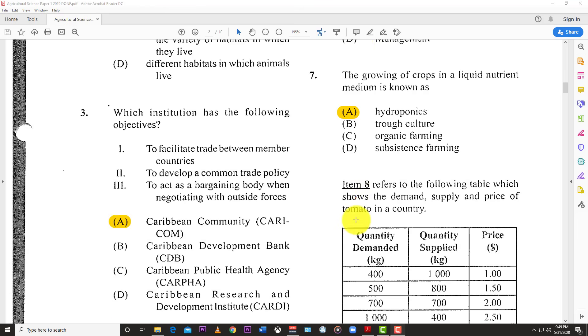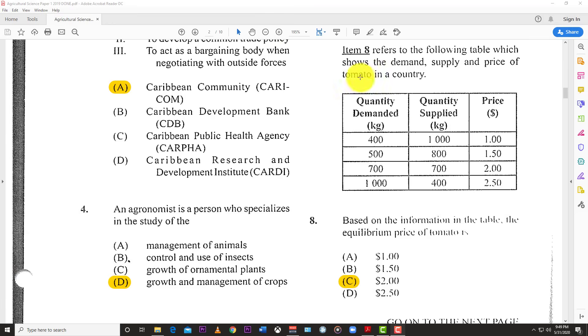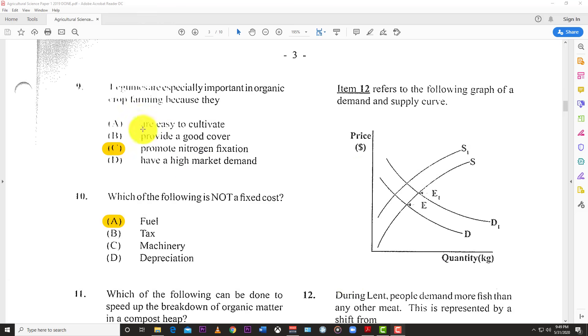Number 7: The growing of crops in a liquid nutrient medium is known as hydroponics. Number 8 refers to the table. The equilibrium price of tomatoes is where quantity demanded and quantity supplied are equal - both at 700, so the price is $2.00.